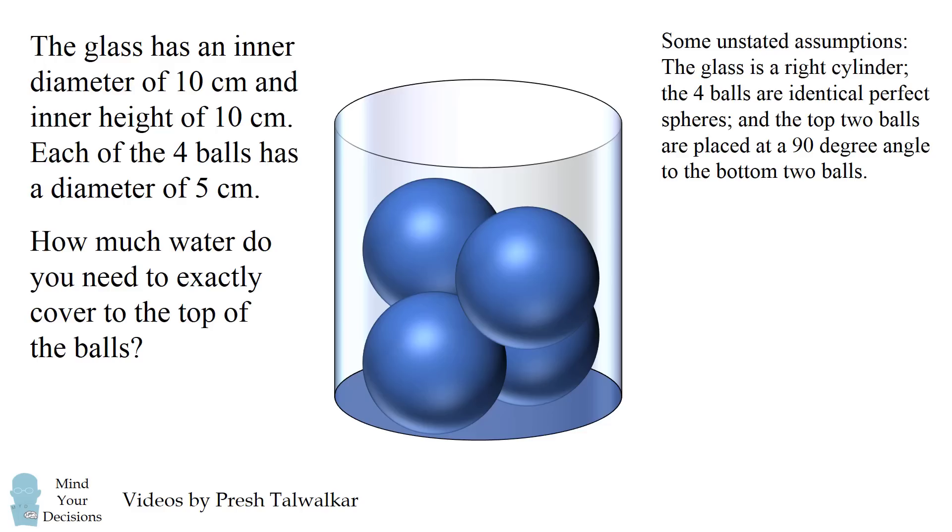You can assume the glass is a right cylinder, the four balls are identical perfect spheres, and that the top two balls are placed at a 90-degree angle to the bottom two balls.